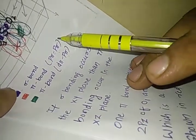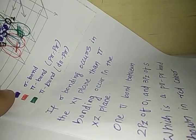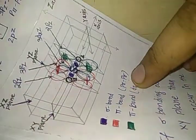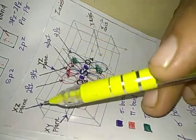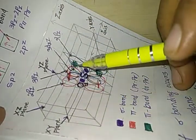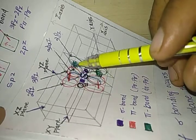So if sigma bond occurs in the xy plane, then pi bonding occur in the xz plane. Now you can see this is your xz plane. So these pi bonds are formed in the xz plane.